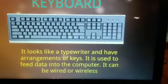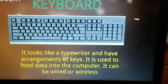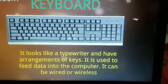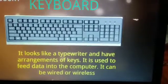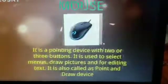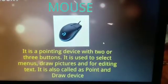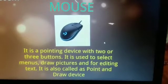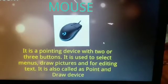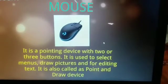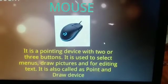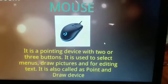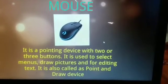Keyboard — it looks like a typewriter and has an arrangement of keys. It is used to feed data into the computer. It can be wired or wireless. Mouse — it is a pointing device with two or three buttons. It is used to select menus, drop pictures, and for editing text.